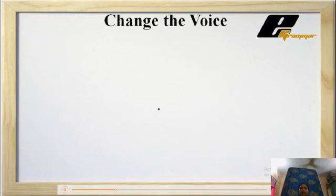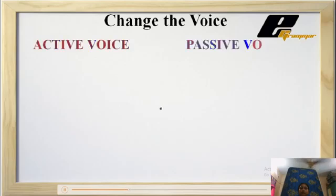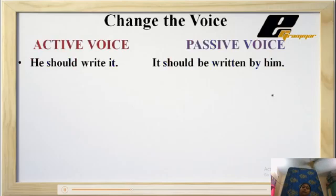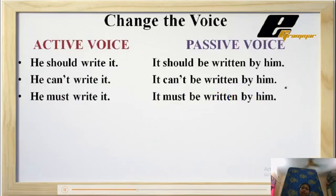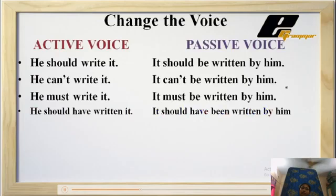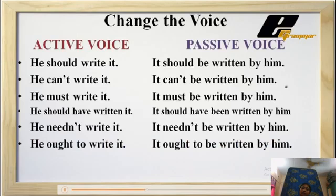Now let's see the first sentences. He should write it — it should be written by him. He can't write it — it can't be written by him. He must write it — it must be written by him. He should have written it — it should have been written by him. He needn't write it — it needn't be written by him. He ought to write it — it ought to be written by him.